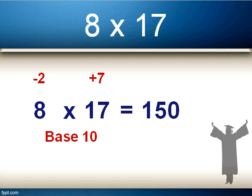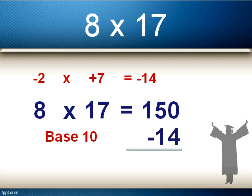The second step is to multiply the two top numbers together. This time we've got minus 2 times plus 7. 7 times 2 is 14, and a minus times a plus is a minus, so this equals minus 14. We then add that number to the one we got in step 1: 150 minus 14, which is equal to 136. So 8 times 17 is equal to 136.